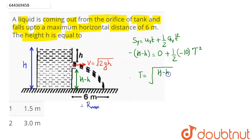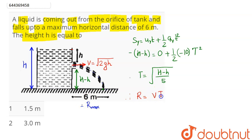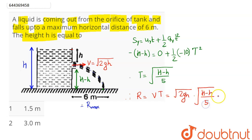So time t comes out to be √((H − h)/5). This is the time of flight. The horizontal component of velocity is v = √(2gh). The range, which is 6 meters, equals v × t, since acceleration along x is 0. So range = √(2gh) × √((H − h)/5).